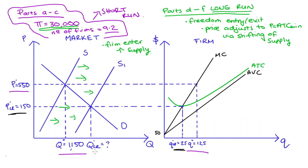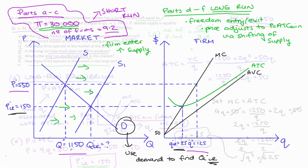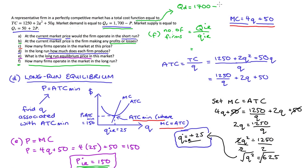This long-run market quantity is what we need to answer part F. We can't use the original market supply equation since that curve has shifted during the adjustment to long-run equilibrium, and we don't know the equation for the new supply curve S1. But we can use the market demand curve — it hasn't shifted. Substituting the long-run price of 150: Q_D equals 1700 minus 150 equals 1550. The number of firms in the long run equals 1550 divided by 25, which equals 62 firms.